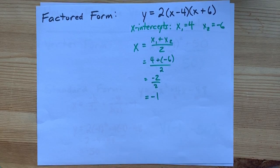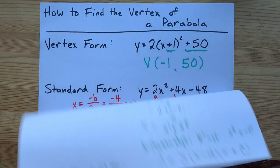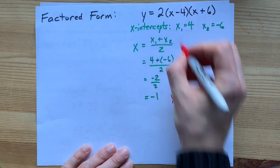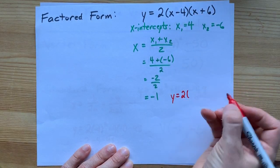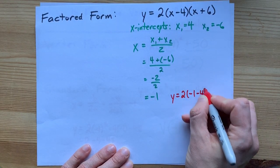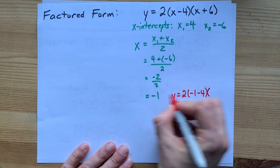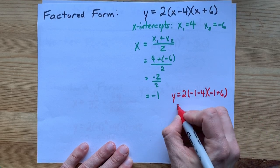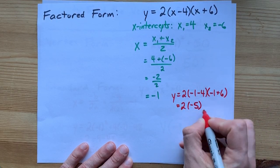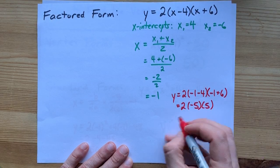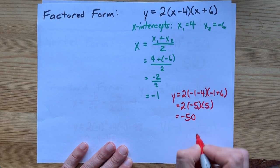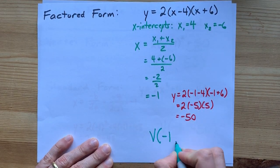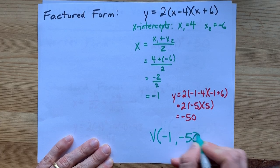What do you do with that? The same thing you did for standard form. You plug it into the equation. y equals 2 times x minus 4. Now x is negative 1 minus 4. x plus 6 is negative 1 plus 6. Do the math. 2 times negative 5 times positive 5. This gives me negative 50. The vertex of this one is also the x that you got and the y that you got. Love it.